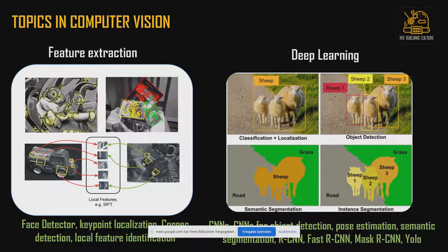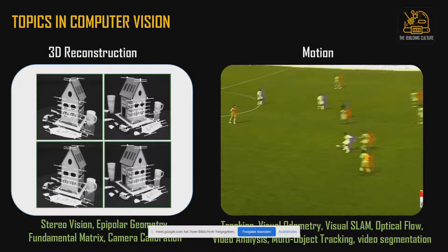Models like Mask RCNN, Fast RCNN, YOLO, and ResNets fall under deep learning. There are also more advanced topics in computer vision, such as using a stereo camera to perform 3D reconstruction. These use concepts like the essential and fundamental matrix, epipolar geometry, camera calibration, and triangulation approaches.